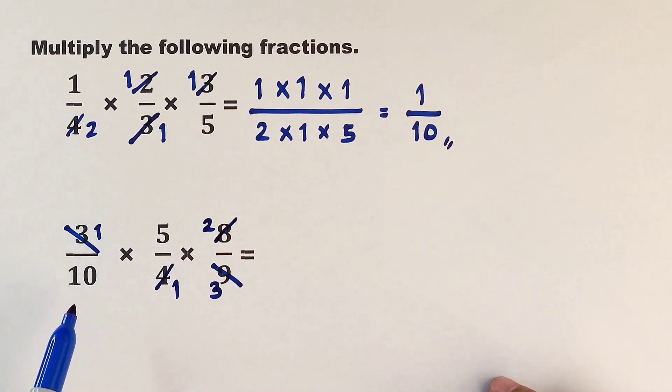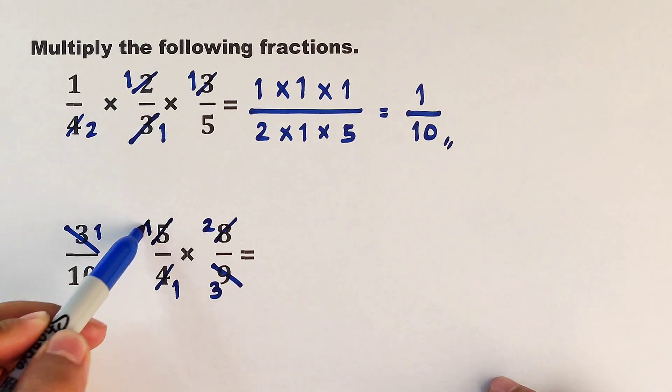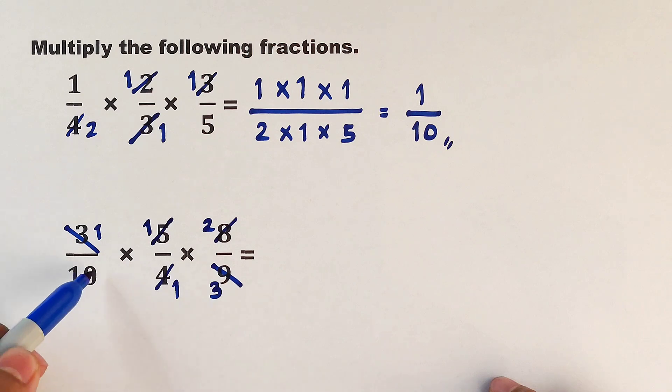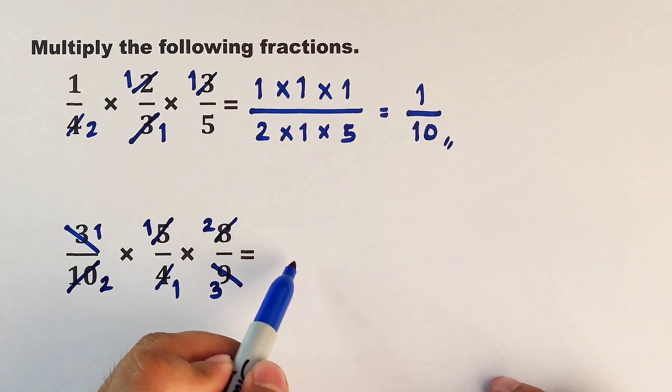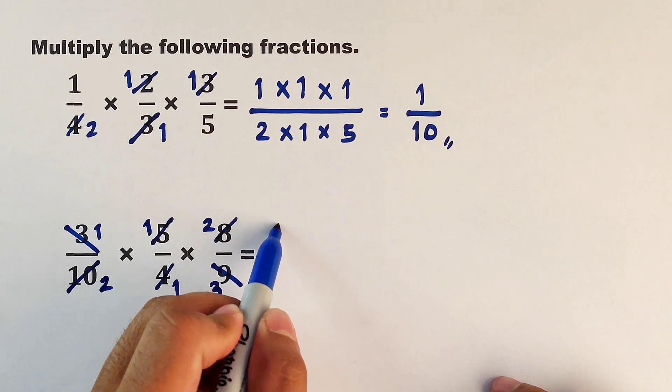So here we have 1 five—it will become 1. And here we have 2 fives, so it will become 2. So what we have now is 1 times 1 times 2 over 2 times 1 times 3.